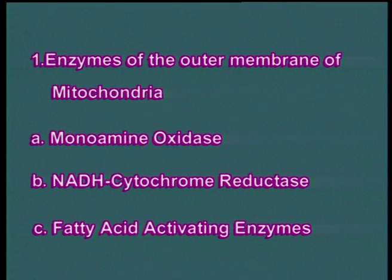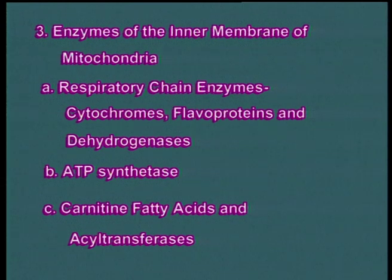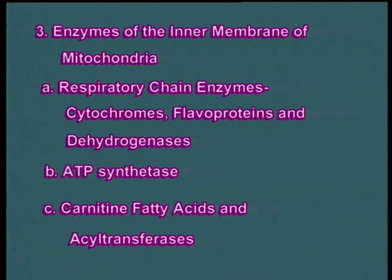Enzymes of the outer membrane of mitochondria include: monoamine oxidase, NADH cytochrome reductase, and fatty acid activating enzymes. Enzymes of the outer chamber of mitochondria include: adenylate kinase and nucleoside diphosphokinase. Enzymes of the inner membrane of mitochondria include: respiratory chain enzymes, cytochromes, flavoproteins and dehydrogenases, ATP synthetase, carnitine fatty acids, and acyl transferases.